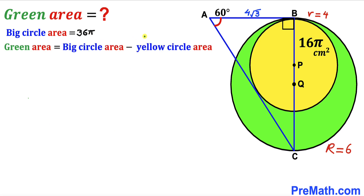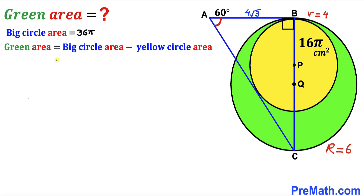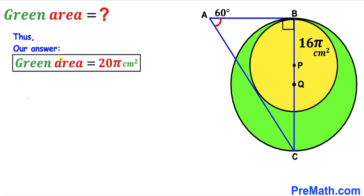For our final step, using our equation: green shaded area = area of big circle − area of yellow circle = 36π − 16π = 20π cm². So the green shaded area is 20π centimeters squared. That's our final answer.